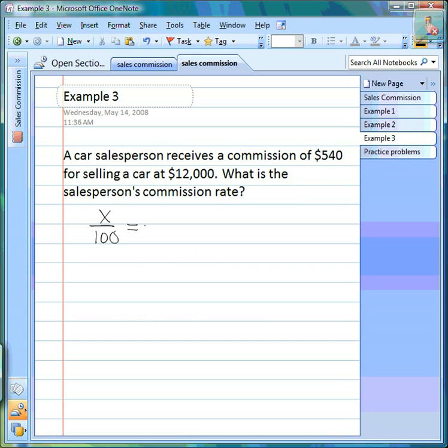We read through the problem: A car salesperson receives a commission of $540 for selling a car at $12,000. What is the salesperson's commission rate? The total cost of the car—remember, the whole cost goes on the bottom—is $12,000. The part is the commission that the person made, was $540. So now we can go ahead and set it up to solve.